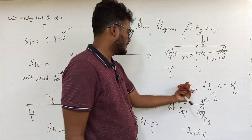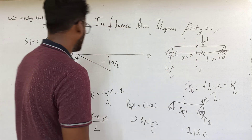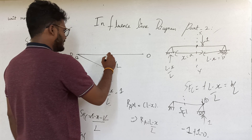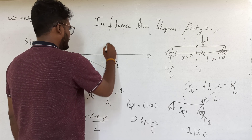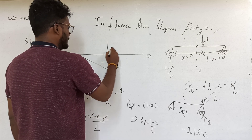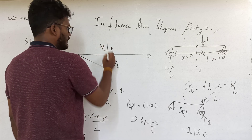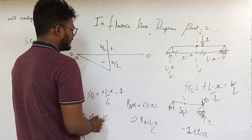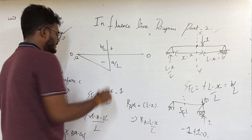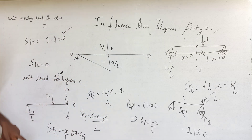Just after crossing C, the shear force value is plus B by L. What is the variation between these points? It should be linear.